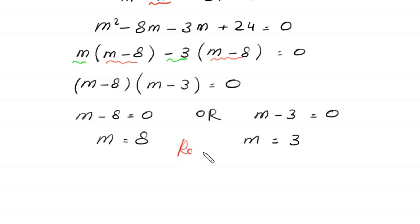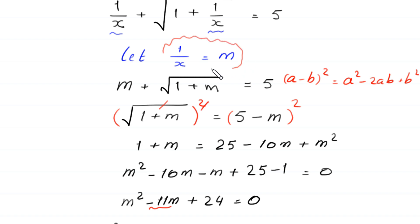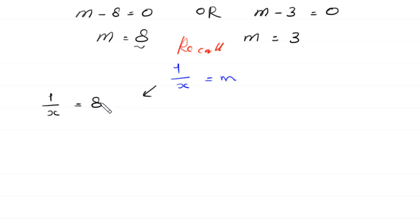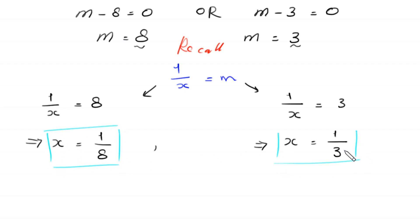To find the values of x, recall that we supposed 1 over x equals m. Substituting m equals 8 gives 1 over x equals 8, which implies x equals 1 over 8. Substituting m equals 3 gives 1 over x equals 3, which implies x equals 1 over 3. So we have two candidate values: x equals 1 over 8 and x equals 1 over 3.